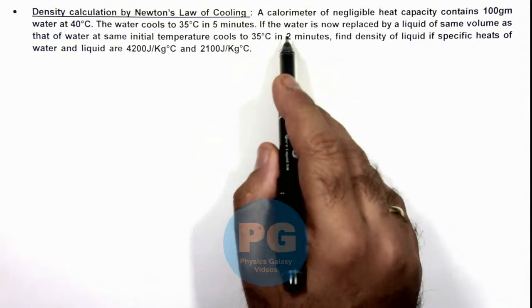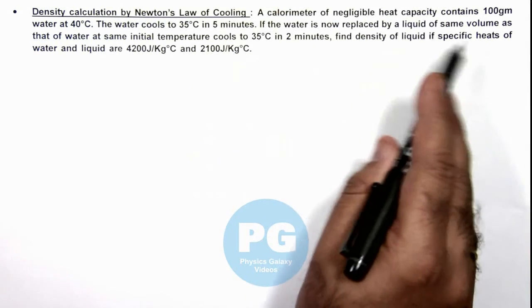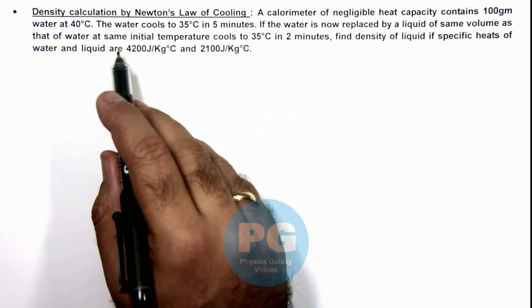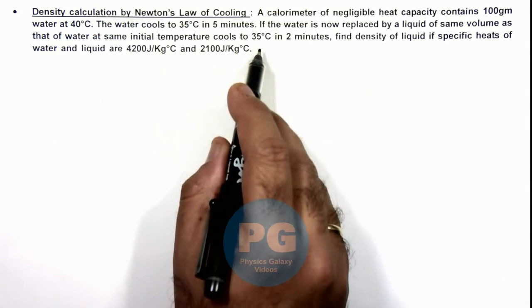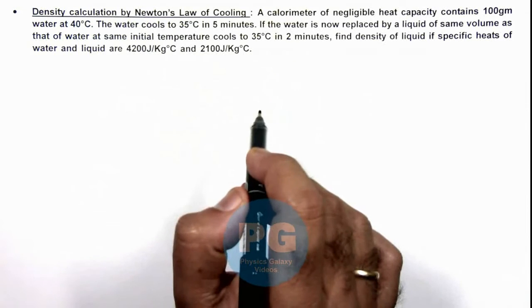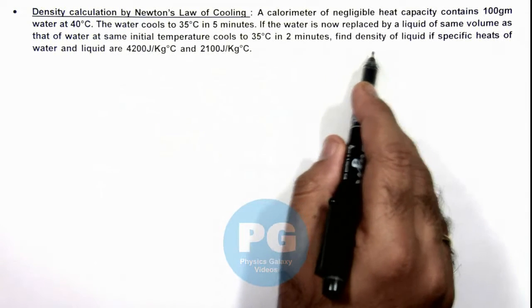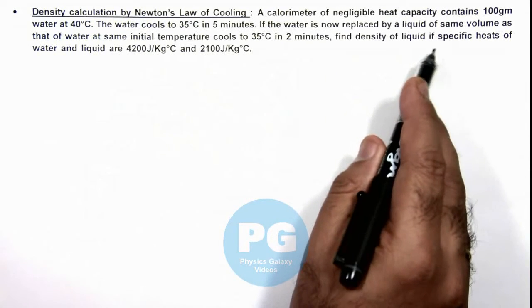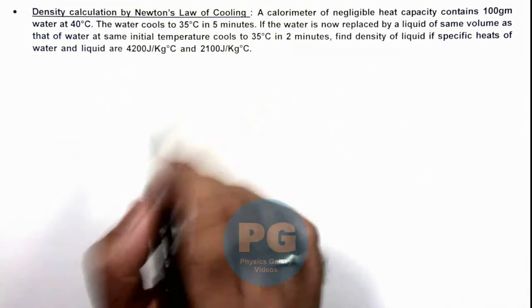Now it is saying if the water is replaced by a liquid of same volume as that of water at same initial temperature that cools to 35 degrees Centigrade in 2 minutes, we are required to find the density of liquid if specific heats of water and liquid are given as these values.